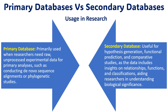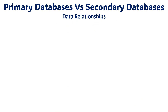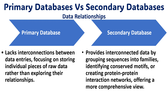What are the different usages of primary and secondary databases in research? A primary database is used when researchers need raw experimental data for primary analysis — like conducting genomic sequence alignments or phylogenetic analysis. Secondary databases are useful for hypothesis generation, functional predictions, and comparative studies — whenever we want to analyze protein functions, structures, and structural activity correlations. Regarding the relationship between data: primary databases lack interconnection between data entries, focusing on storing individual pieces of raw data. Secondary databases have more correlated data, providing interconnected data by grouping sequences into families and identifying conserved motifs.